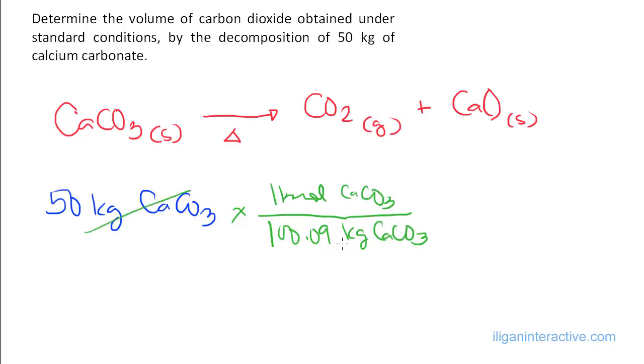With that, the kilograms of CaCO3 cancel out. Now we need to go into the kilomoles of carbon dioxide. Based on the balanced equation, one kilomole of CO2 gas equals one kilomole of CaCO3. For every kilomole of CaCO3, you produce one kilomole of carbon dioxide.